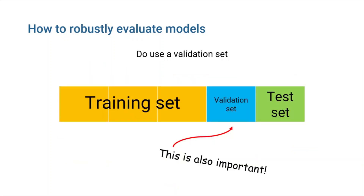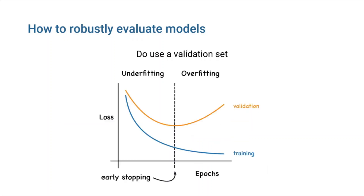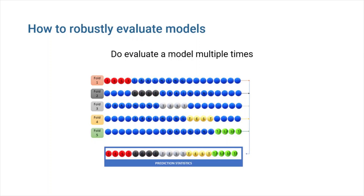Do use a validation set. It's critical not to include the test set in the training process directly. Instead, performance should be measured using an independent validation set — a collection of samples not directly involved in training but used to guide training. Another advantage of having a validation set is that you can conduct early stopping, which means you can stop training as soon as the validation set's error is higher than it was the last time it was checked. Do evaluate a model multiple times. Many ML models are unstable — if you train them multiple times or make small changes to the training data, their performance varies significantly. Cross-validation is particularly popular and comes in numerous varieties.